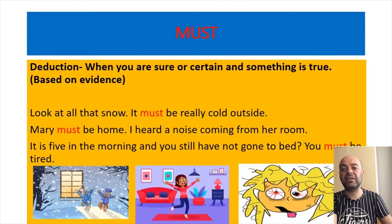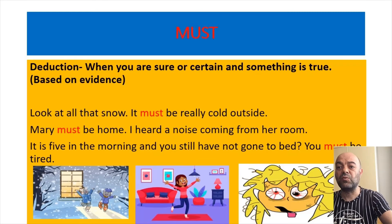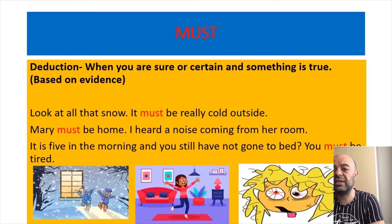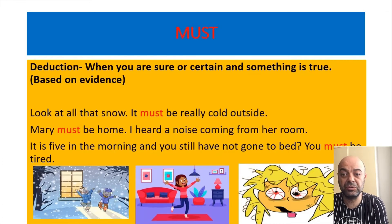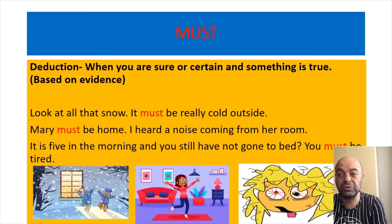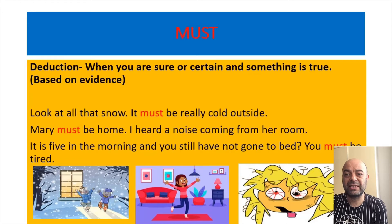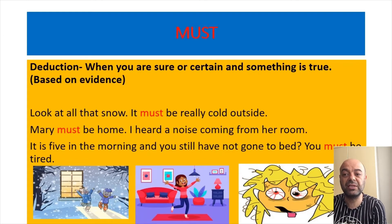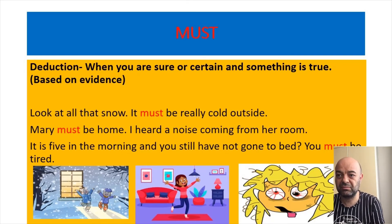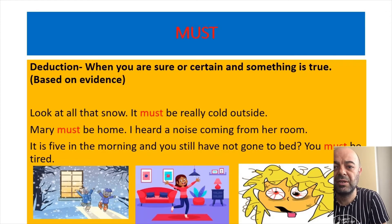Must for deduction — when you are sure or certain that something is true based on evidence, you can use must. Look at that snow — it must be really cold outside. You can imagine it's snowing and cold, and you are sure about the cold.